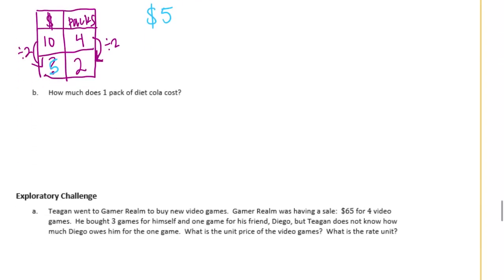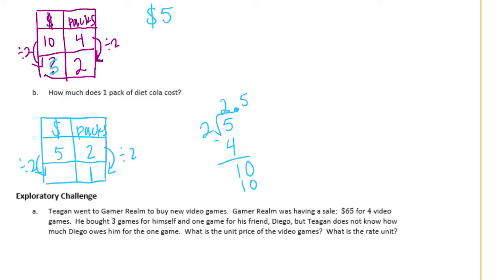How much does one pack of Diet Cola cost? We can do that again. Draw my chart - money, packs. We know that it's $5 for two packs so how to get to 1 pack? Again we would divide by 2 and 5 divided by 2 isn't a whole number. 2 goes into 5 two times. 2 times 2 is 4. Subtract and get 1. What we learned in 5th grade, you can put a decimal right here and just add a 0 and keep going. 2 goes into 10 five times. So we get $2.50 for 1 pack.